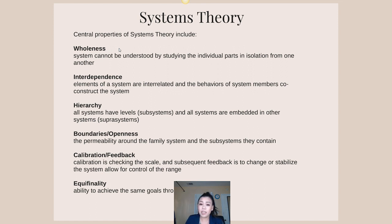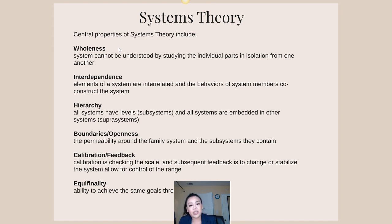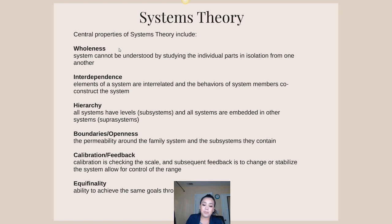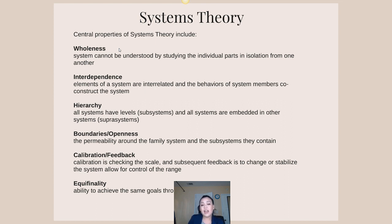The second component is interdependence — family members are interrelated not only biologically but need one another to survive, so their behaviors are interconnected. When we grow up in families, they influence each other a lot. We all have unique personalities but are also products of our parents or guardians, who influence us heavily. The third is hierarchy — most families have levels of power. Boundaries and openness refers to how open a family is to change from the outside world, how closed off they are, and the subsystems they contain.